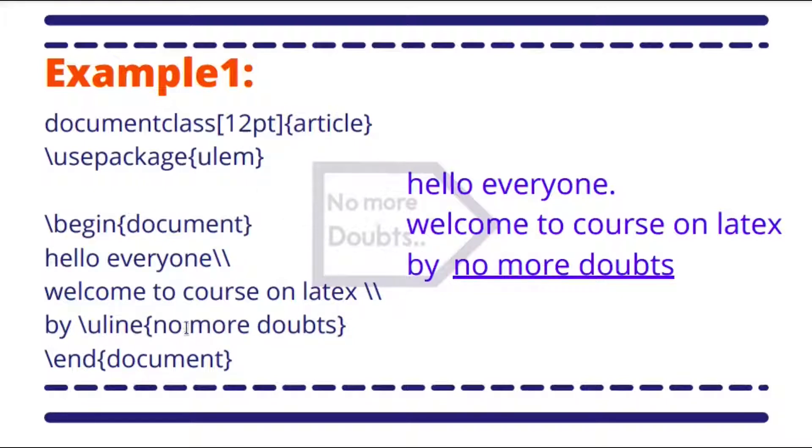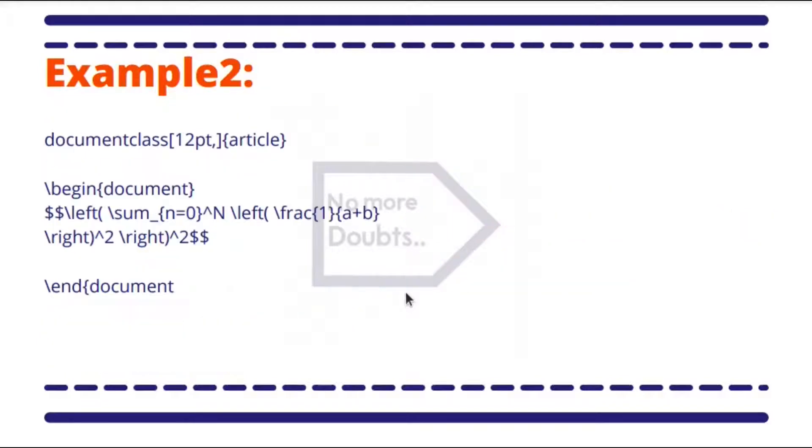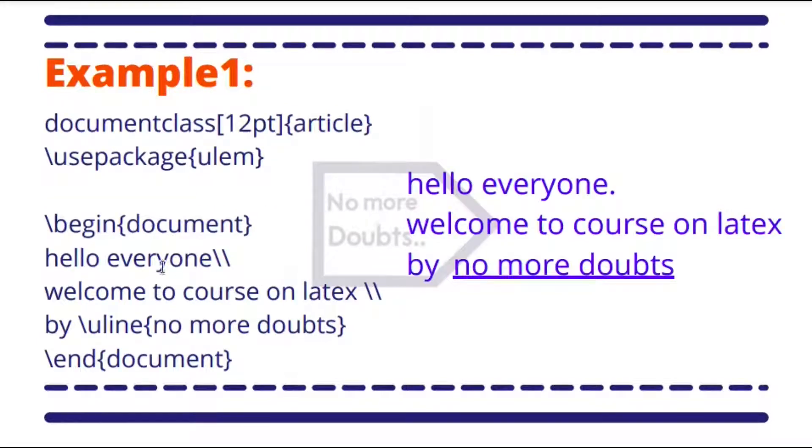This is the package we included in the program: ulem, which is used to underline the text. This command \underline is used to underline the text in the curly braces. \begin{document} and \end{document} are the commands—the entire program between these two commands will be compiled and the output will be printed here. 'Hello everyone' is printed, two backslashes means it is used to go to the next line, 'welcome to course on LaTeX,' and again backslashes, and by underlining 'no more doubts.' This is the output of the simple program.